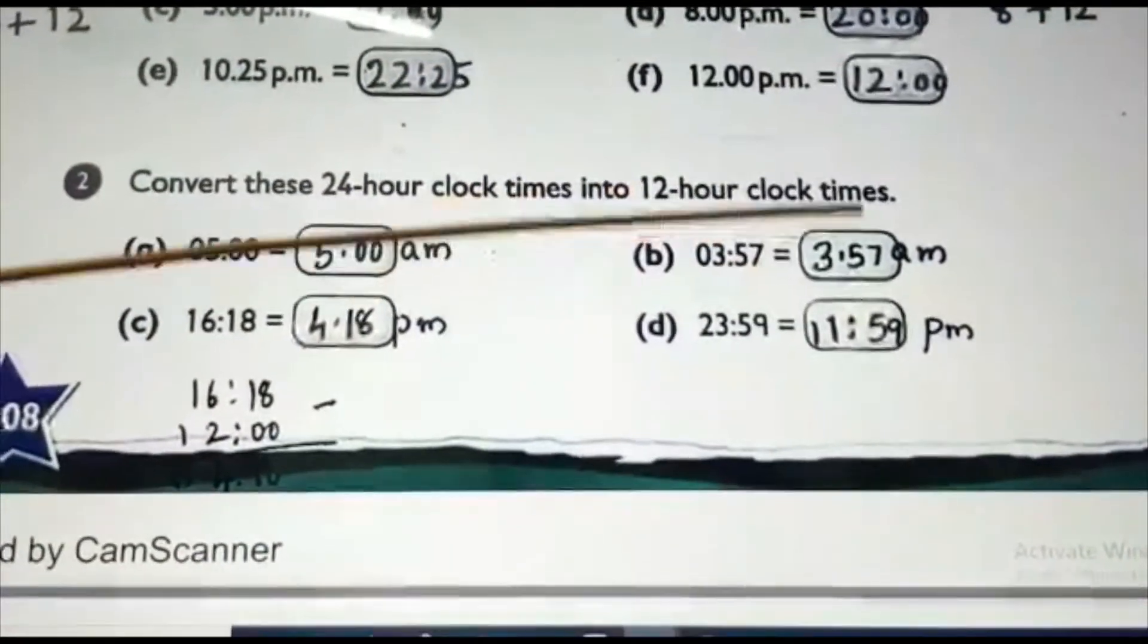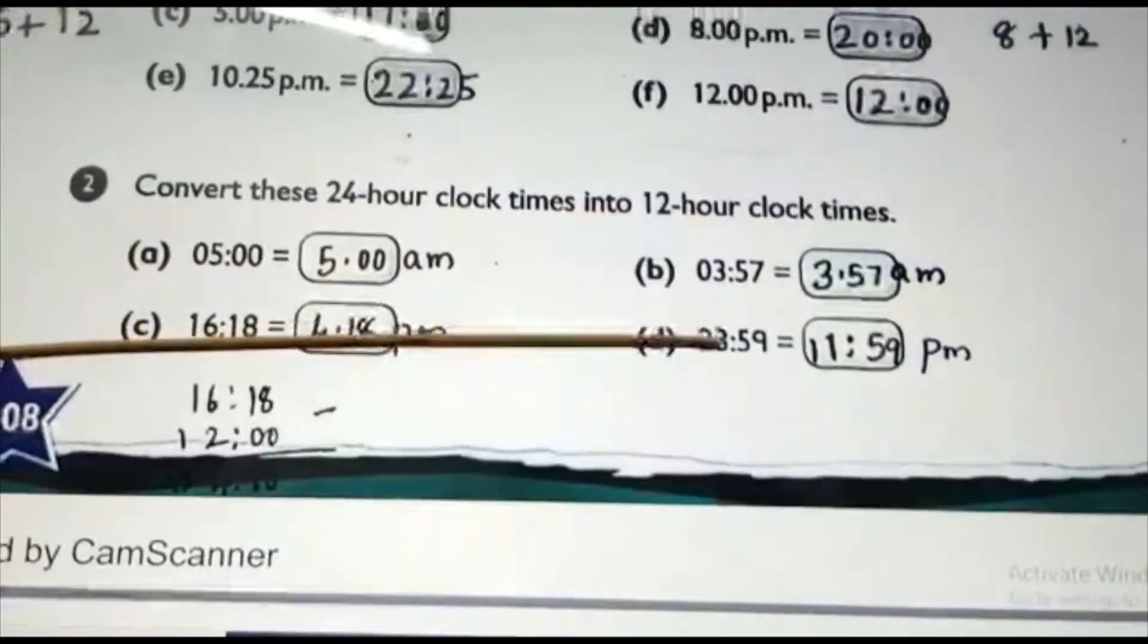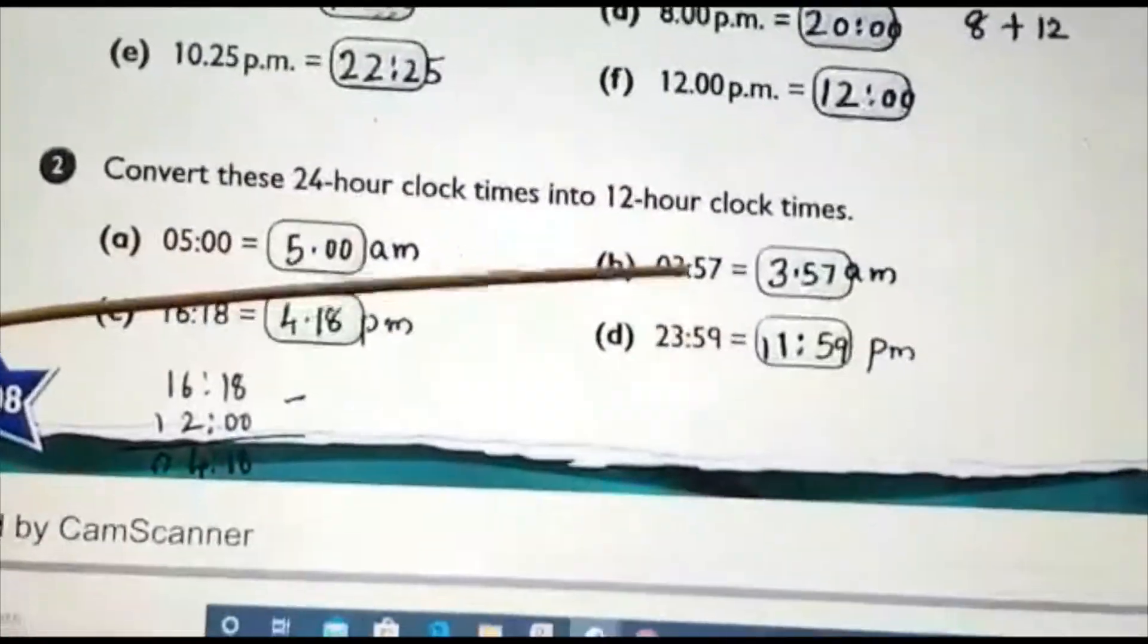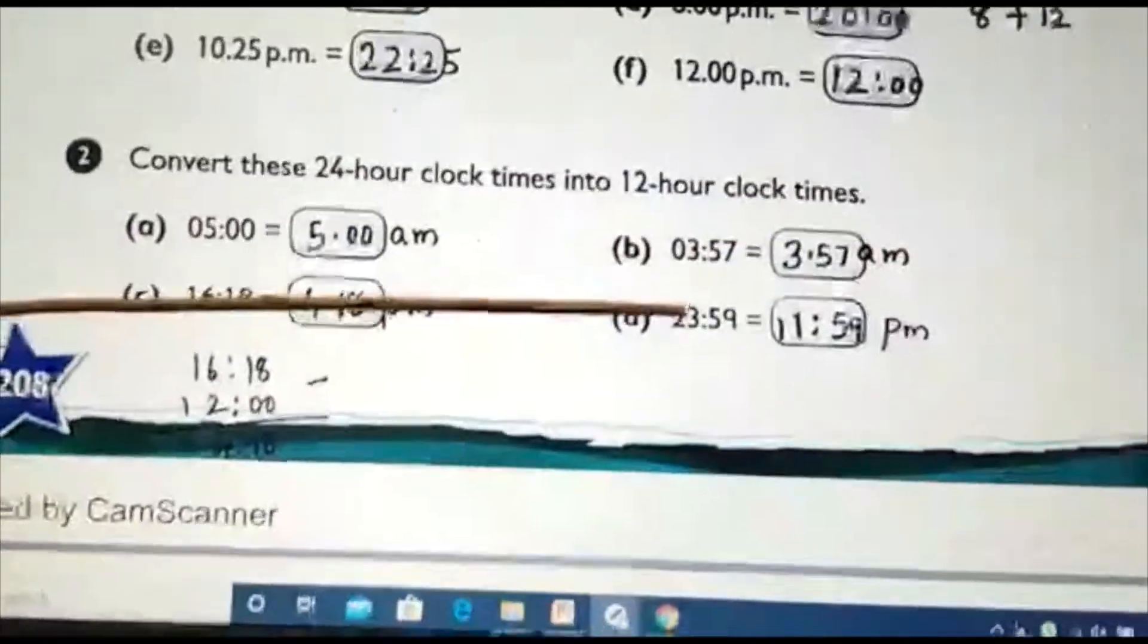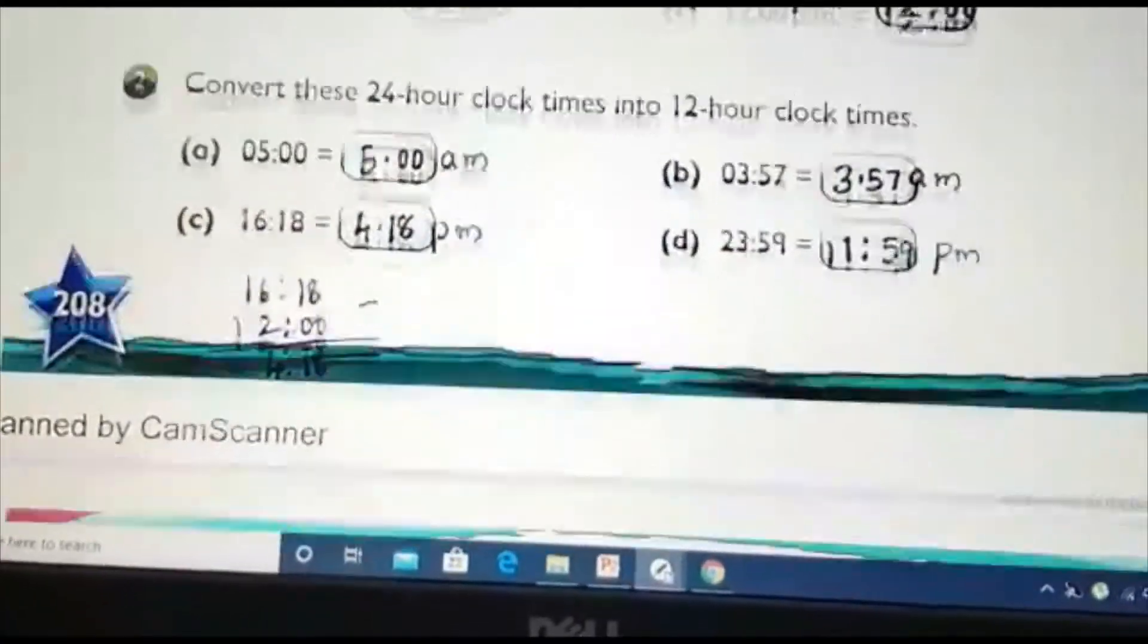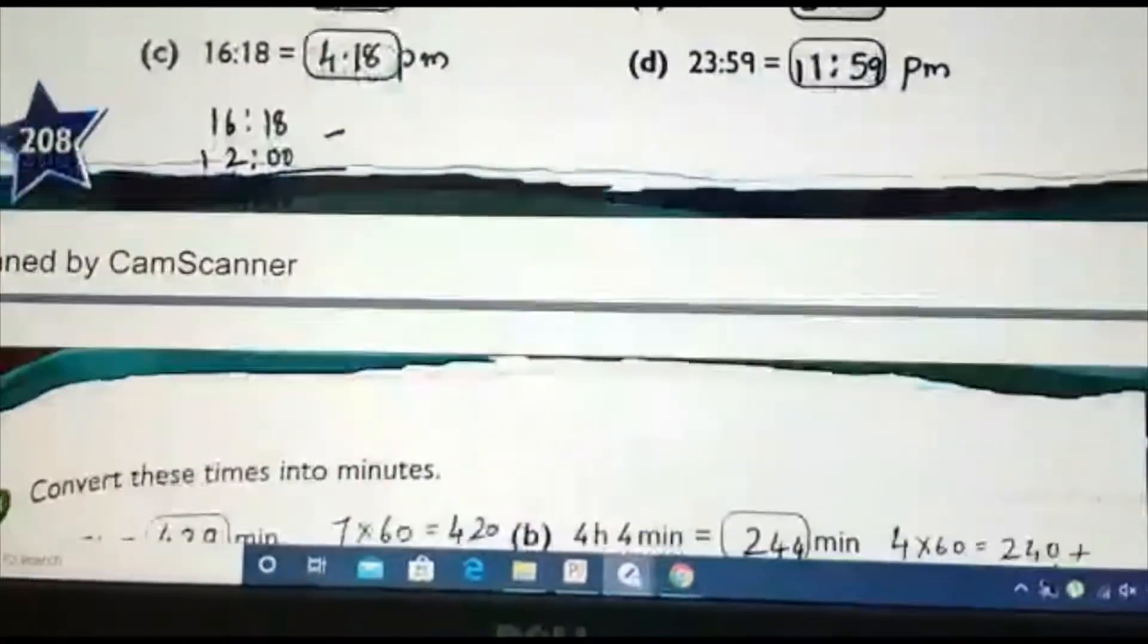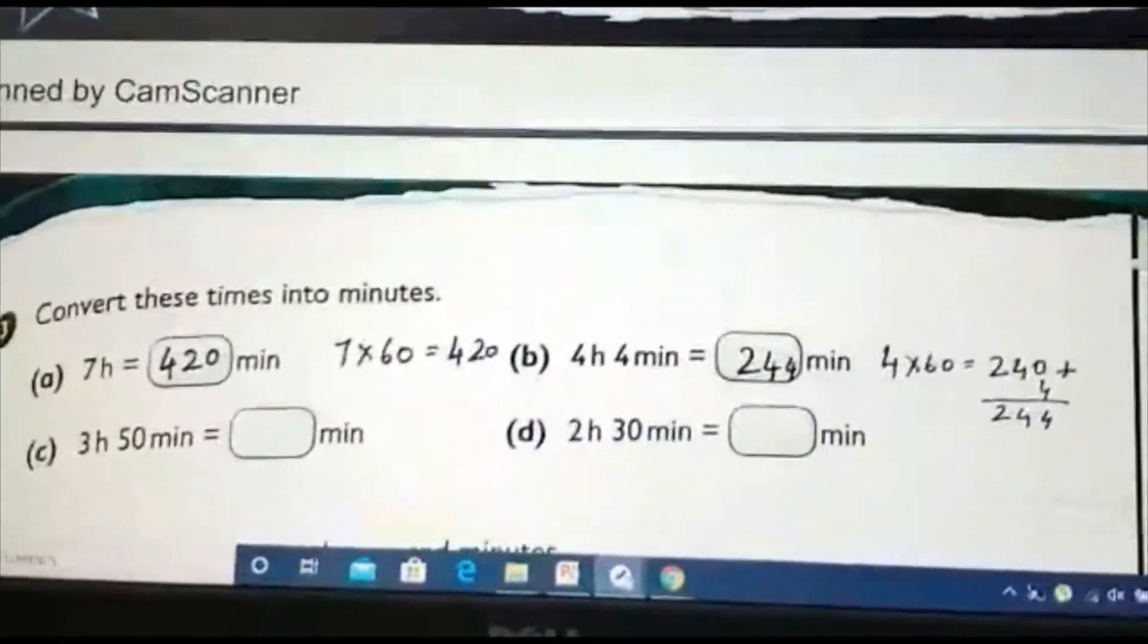Again, this will be AM time. Because, it is less than 12. Here, 23 will be PM time. This will be AM time. This will be PM. That is 23:59 minus 12. That is 11:59. I am just going through. Quickly going through the answers. You know this. But, just check your answers. That is all. Okay.